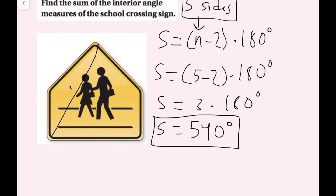So here's my first triangle, and I can draw one right here, and another here — now I've broken this up into three triangles. A quick note: you cannot draw a line from a vertex to the middle of the shape; it must go from vertex to vertex. So I've broken this into three possible triangles with no others that can be made.